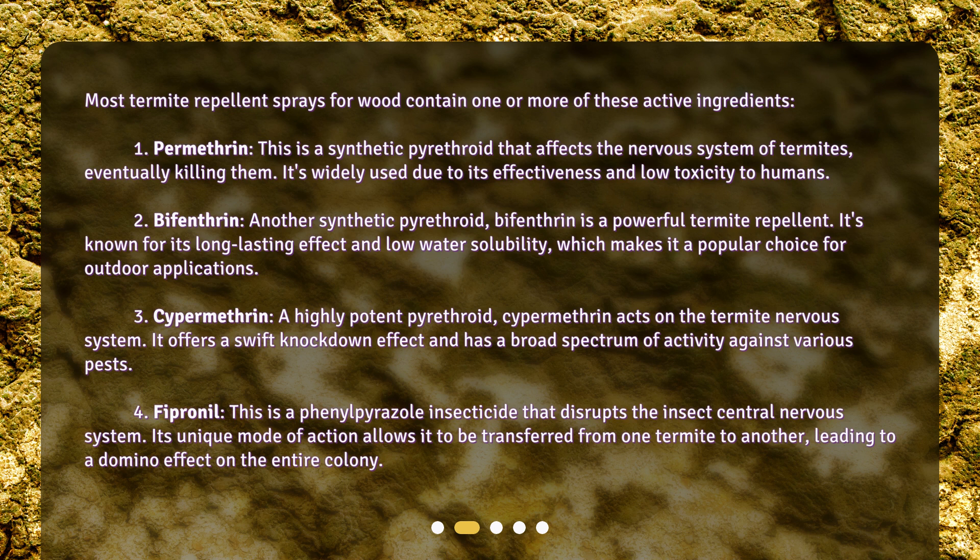It offers a swift knockdown effect and has a broad spectrum of activity against various pests. 4. Fipronil — this is a phenylpyrazole insecticide that disrupts the insect's central nervous system. Its unique mode of action allows it to be transferred from one termite to another, leading to a domino effect on the entire colony.